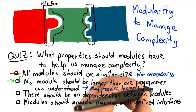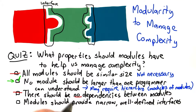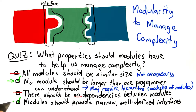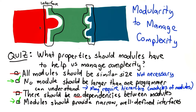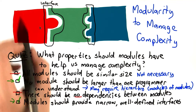The third answer is incorrect. If there are no dependencies at all between the modules, that means they're not working together. In order for the modules to work together, there has to be some connections between them. What we want is for those dependencies to be manageable. We want there to be small, well-defined interfaces between the modules. That means that in order to use one module, what we need to understand about that module is as little as possible, but enough to be able to use it to build something useful.